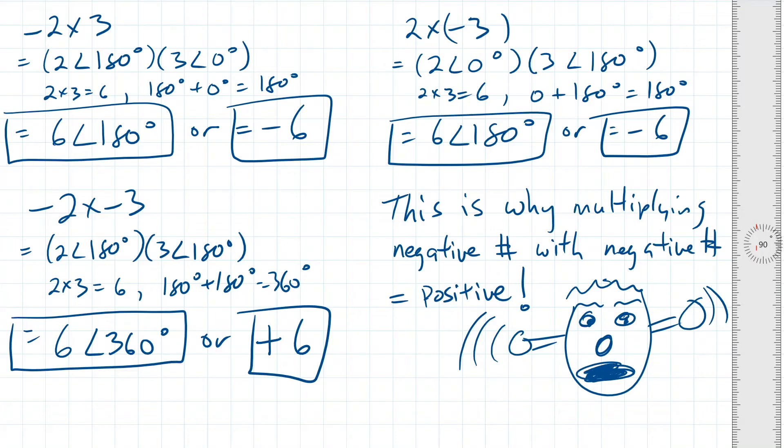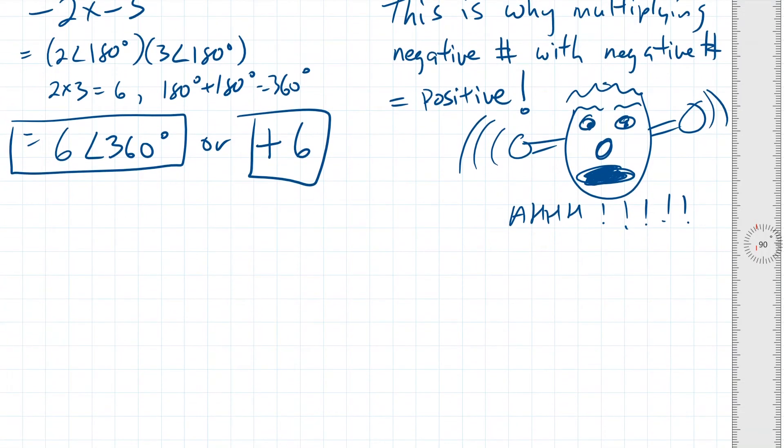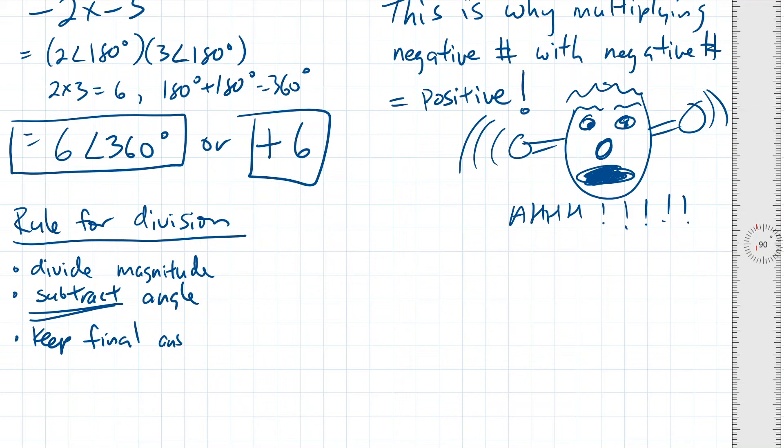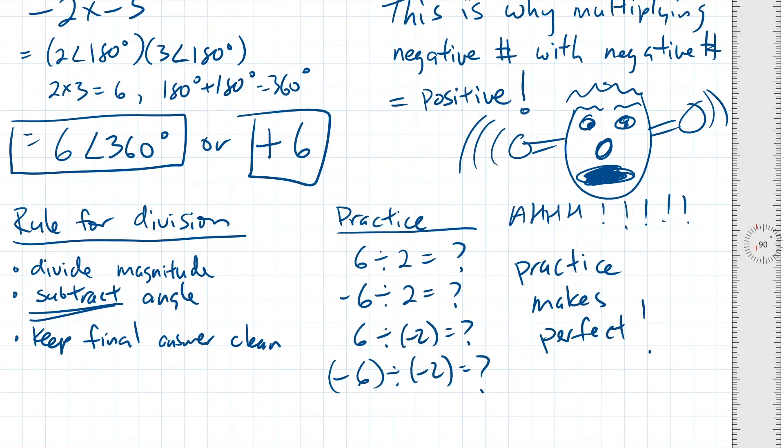By the way, if you add the polar angles together when multiplying, then you would subtract the polar angles when dividing. I hope that you'll try out this example on your own to prove why a positive number divided by a negative number equals a negative number, and why a negative number divided by a negative number equals a positive number. You can hit the space bar right now, or tap your screen to pause the video, and try this out on your own.